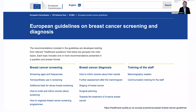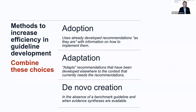The source guidelines can be found on the European Commission EU Science Hub under ECIBC, and they contain approximately 70 recommendations related to breast cancer screening and diagnosis. To recap, methods to increase efficiency in guideline development include adopting, adapting, or de novo creation of recommendations. The combination of these choices leads to adoptment.